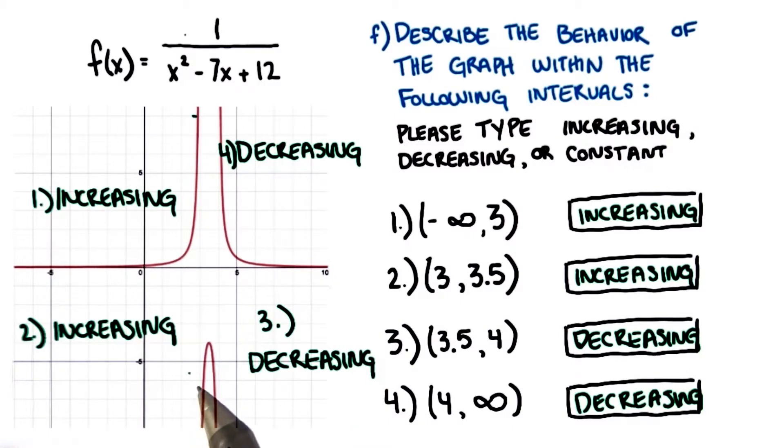At x equals 3, we have an asymptote and the curve to the right of that rises from negative infinity up to the maximum that you found in the question before at 3.5 comma negative 4 before falling again towards negative infinity as it approaches the asymptote x equals 4.